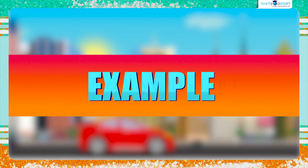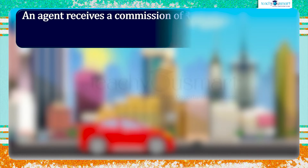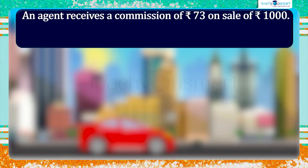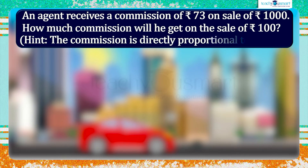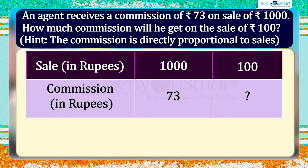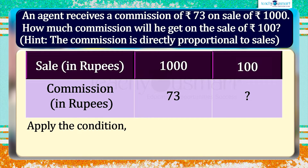Let's see another example. An agent receives a commission of 73 rupees on a sale of 1000 rupees. How much commission will he get on the sale of 100 rupees? Here, the commission is directly proportional to sales. Given the agent receives a commission of 73 rupees on a sale of 1000 rupees, if the sale is 100 rupees, then the commission will be less than 73 rupees. Since it is in direct proportion, we can apply the condition.